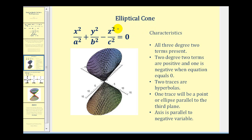All three degree two terms are present. However, two of the degree two terms are positive and one of them is negative. Two of the traces will be hyperbolas, and one trace will be a point or an ellipse parallel to the third plane. And the axis will be parallel to the negative variable.